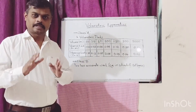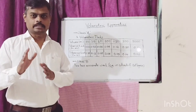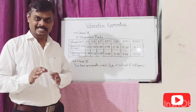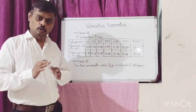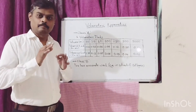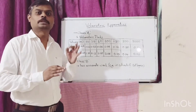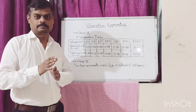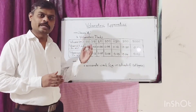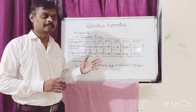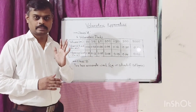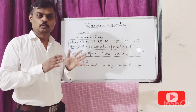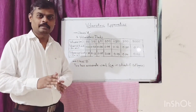The selection of the correct volumetric apparatus is a critical step in any quantitative analysis. For example, a burette to be used for analysis should be of such size that the titrant volume represents more than 30% of the nominal capacity of the burette. If your expected burette reading is 15 ml, you cannot use a burette of 50 ml size, because 30% of 50 ml is around 17 ml, and 15 ml is less than 30% of the nominal capacity.